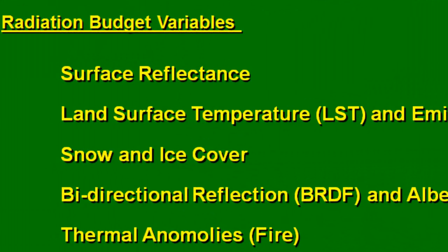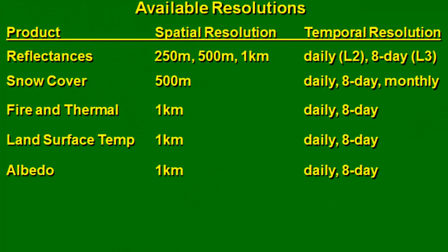Some example non-vegetation land products are the radiation budget variables: surface reflectance, land surface temperature, snow extent, bidirectional reflectance and albedo, and hot spots — which we'll work with next week. These products are available in a variety of spatial and temporal resolutions. For reflectances and vegetation index, we can get 250-meter pixels. Reflectances are available daily or every eight days. Snow cover is available at 500-meter resolution or larger, daily, eight-day, or monthly.